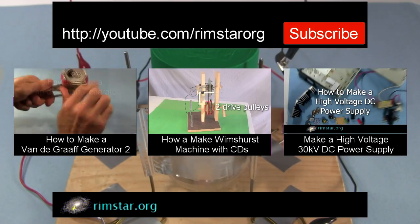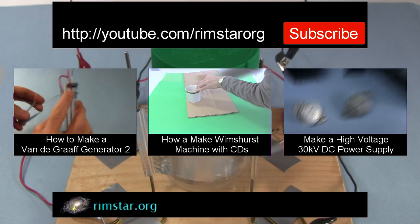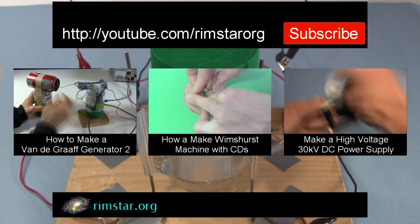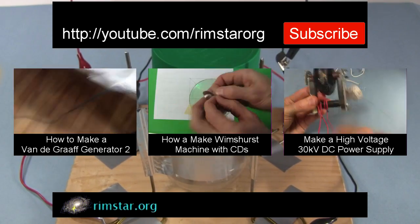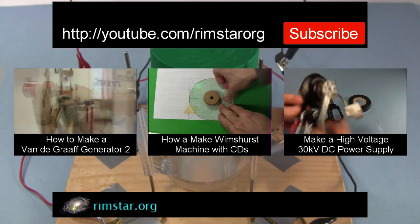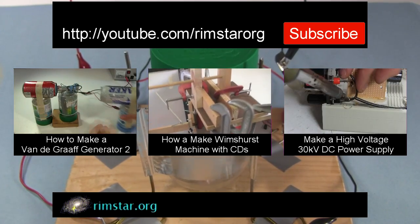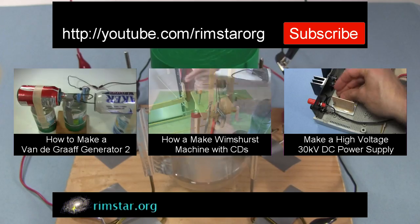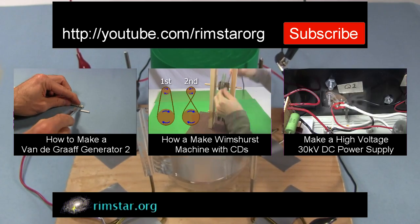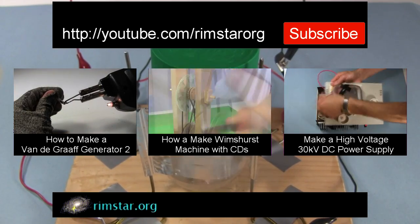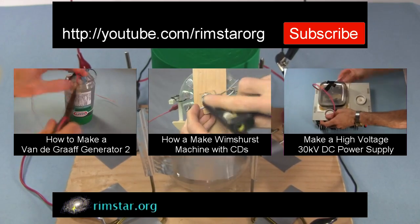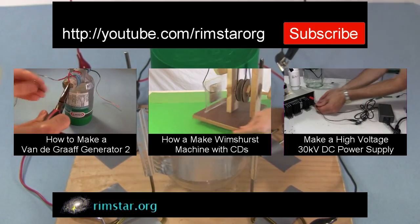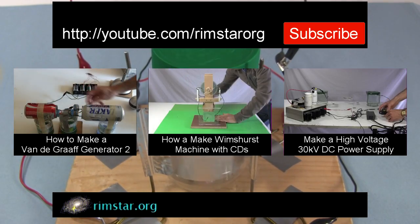Well, thanks for watching. See my YouTube channel, RimstarOrg, for more videos like this. That includes one on how to make the homemade Van de Graaff generator you saw in this video, another on how to make a Wimshurst machine using CDs for the discs, and one on how to make a more powerful high voltage 30kV DC power supply. And don't forget to subscribe if you like these videos, or give a thumbs up, leave a question or comment below.